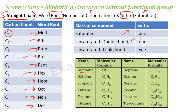For example, methane has one carbon only, so word root is 'meth'. And it is all saturated — there is no double bond — so the suffix is '-ane'. We add 'meth' for the number of carbons and '-ane' as a suffix, so it becomes methane.